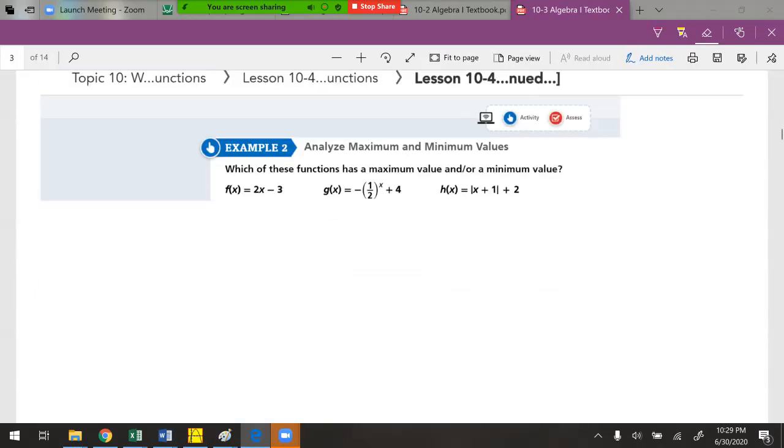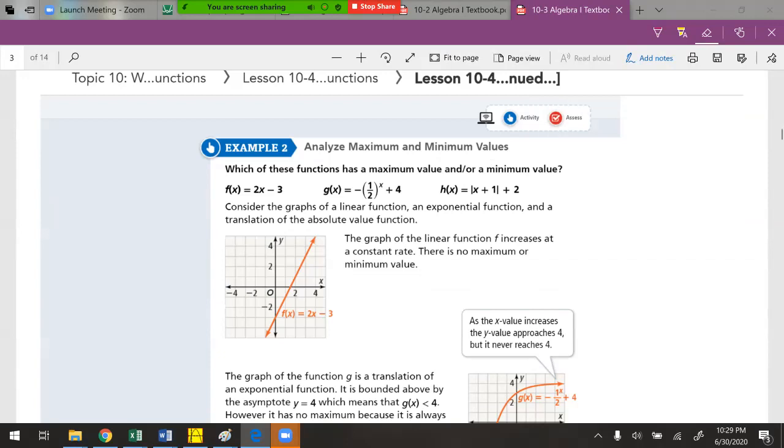Let's look at the next page here. Which of these functions have max and min? Remember, maximum means highest, minimum means lowest. So we need to figure out which ones can give you which. Well, this is a linear function. Continues forever and ever left and right. There's no max or min.